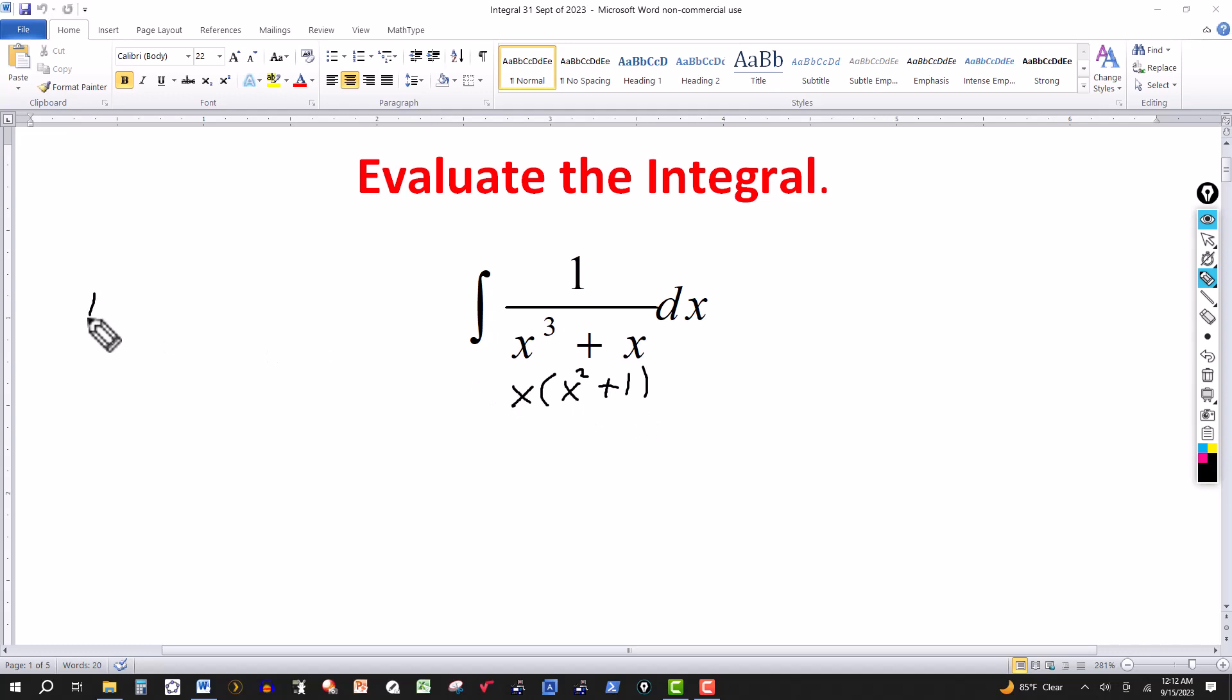So I think we'll use partial fraction decomposition. We get one factor is linear and the other one is an irreducible quadratic. So we can write the linear factor as A over x, and the irreducible quadratic could have first degree or lower, so we'll write that as Bx plus C over x squared plus 1.